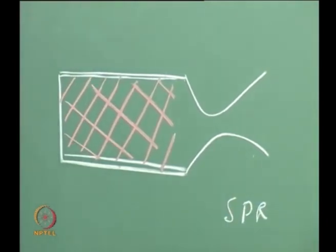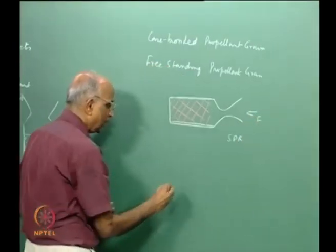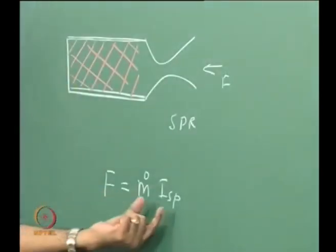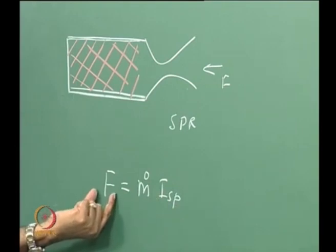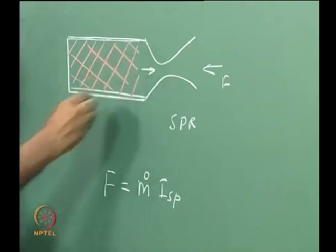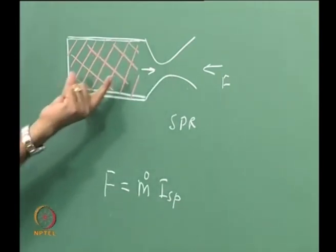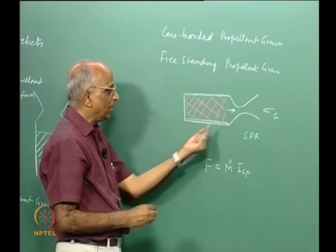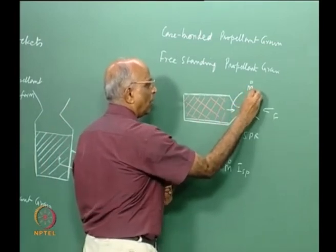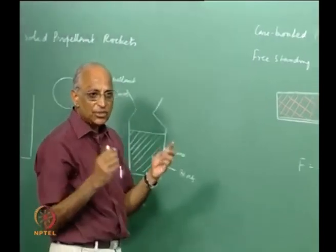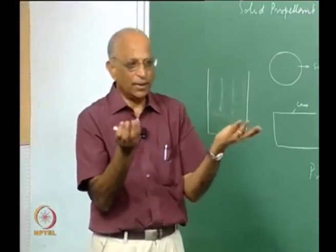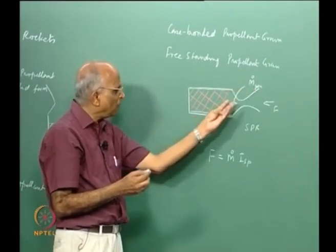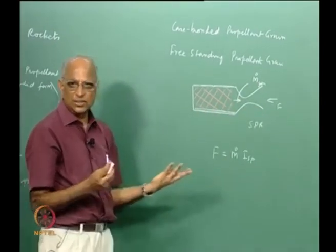What is it we want a rocket to do? We want the rocket to generate some thrust. The thrust of the rocket is equal to m-dot into V_j, or m-dot into the specific impulse. We learned how to calculate the specific impulse, and supposing I want to generate a large force, I want to generate more mass flow from the burning propellant. In today's class we will first examine how to make a propellant grain — either case bonded or freestanding — and then, when we ignite and start burning it, how do we ensure sufficient mass is getting generated from the propellant.